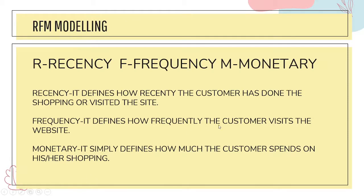The third factor is Monetary — the overall spending a customer does on a website. If a customer is spending a considerable amount, they are categorized into a group more loyal to the website. Whereas if the total amount spent by a customer is very low, we consider them in a different category.